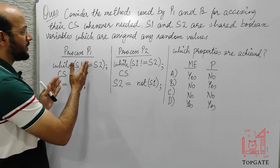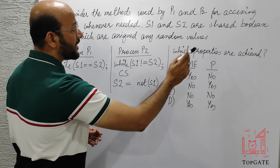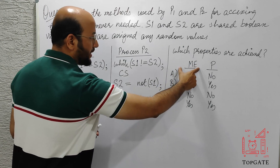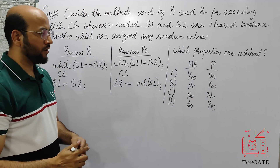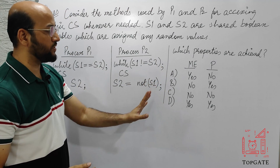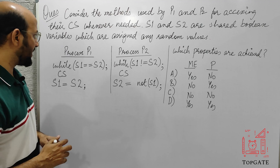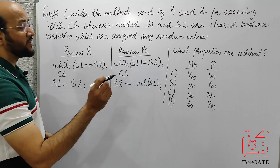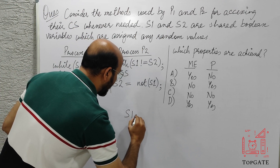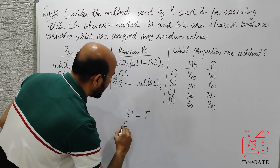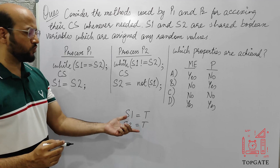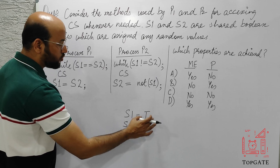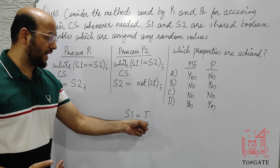We have code for processes P1 and P2, and we need to find out which properties are achieved — mutual exclusion or progress. Let's take S1 = true and S2 = true initially. We'll analyze what happens when both processes want to enter the critical section at the same time.